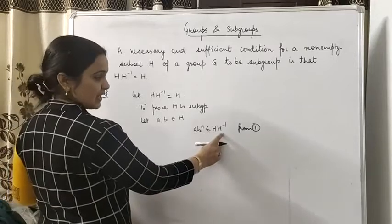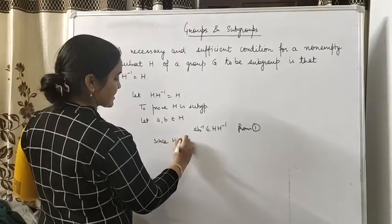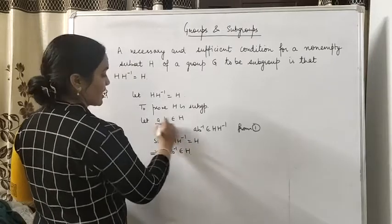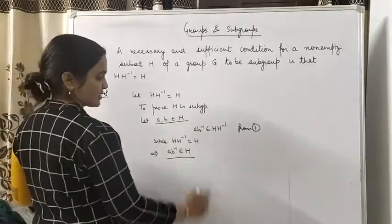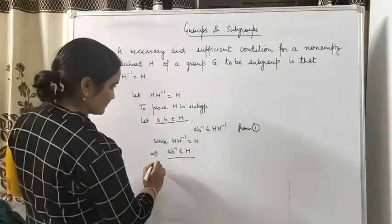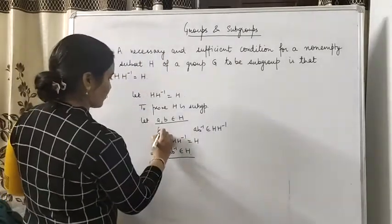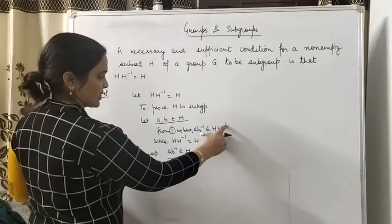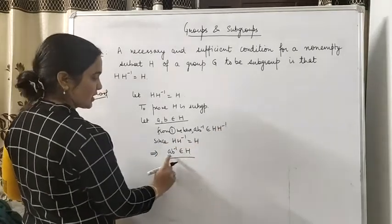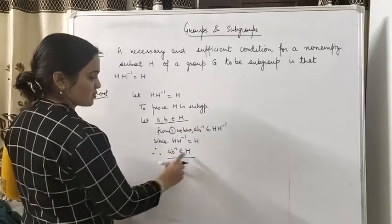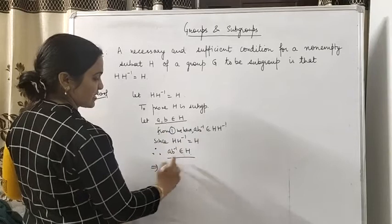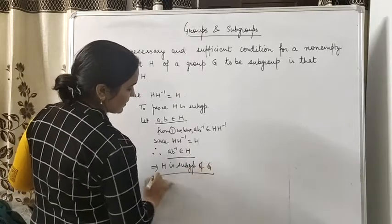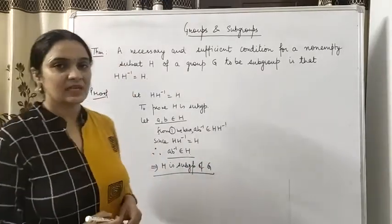A·B⁻¹ H·H⁻¹ में है। Since H·H⁻¹ = H, therefore A·B⁻¹ also belongs to H. A, B H में था, और A·B⁻¹ H में चला गया, implies H is subgroup of G. यही आपने proof करना था। So this completes the second part of the theorem.